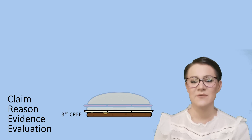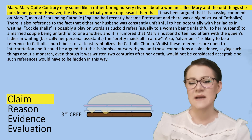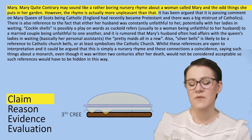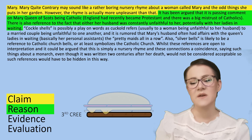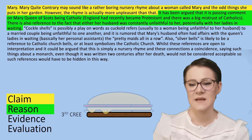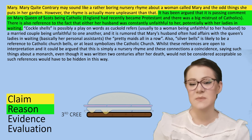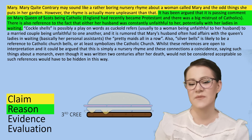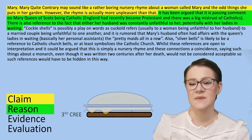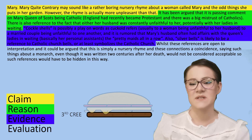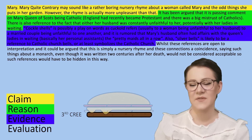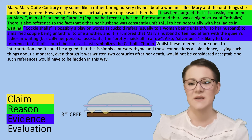In the third CREE paragraph I have written: 'Mary, Mary, Quite Contrary may sound like a rather boring nursery rhyme about a woman called Mary and the odd things she puts in a garden. However, the rhyme is actually more unpleasant than that. It has been argued that this is a passing comment on Mary, Queen of Scots being Catholic. England had recently become Protestant and there was a big mistrust of Catholics. There is also a reference to the fact that either her husband was constantly unfaithful to her, potentially with her ladies-in-waiting. Cockleshells is possibly a play on words as it refers to cuckold — usually to a married couple being unfaithful to one another — and it is rumoured that Mary's husband often had affairs with the Queen's ladies-in-waiting, basically her personal assistants, the pretty maids all in a row.'